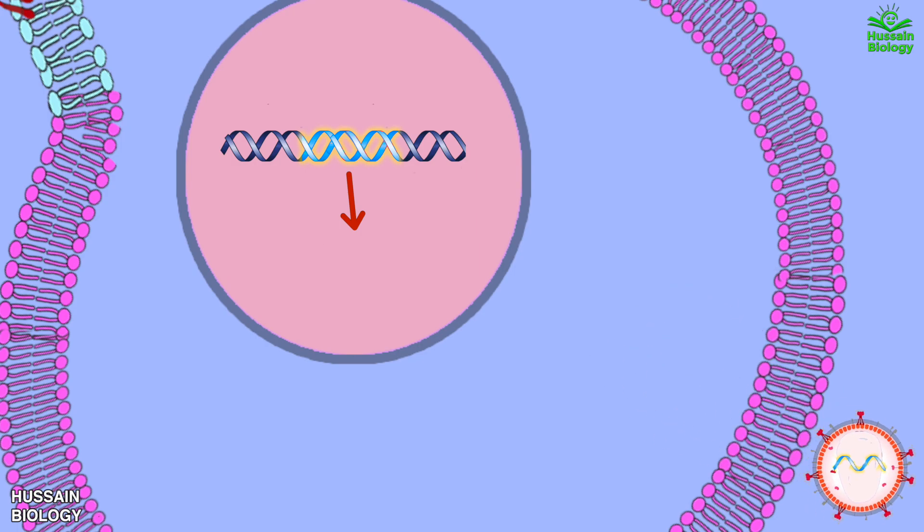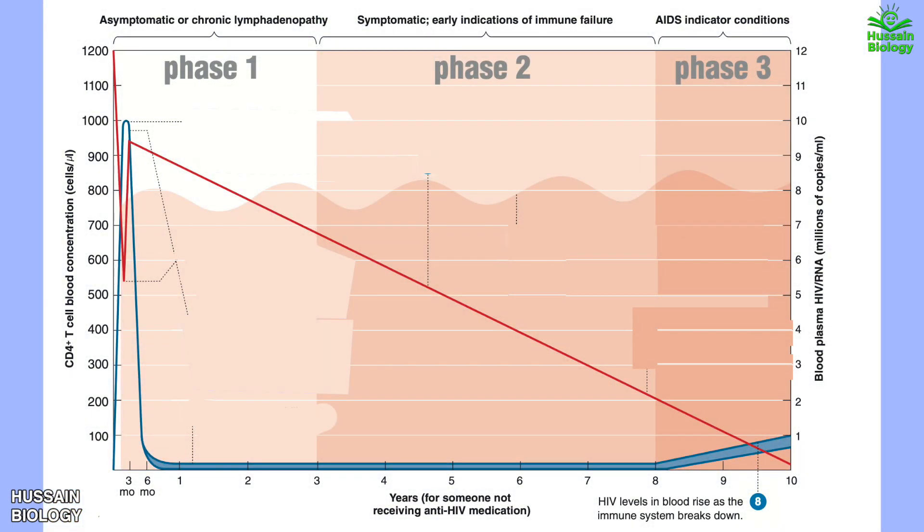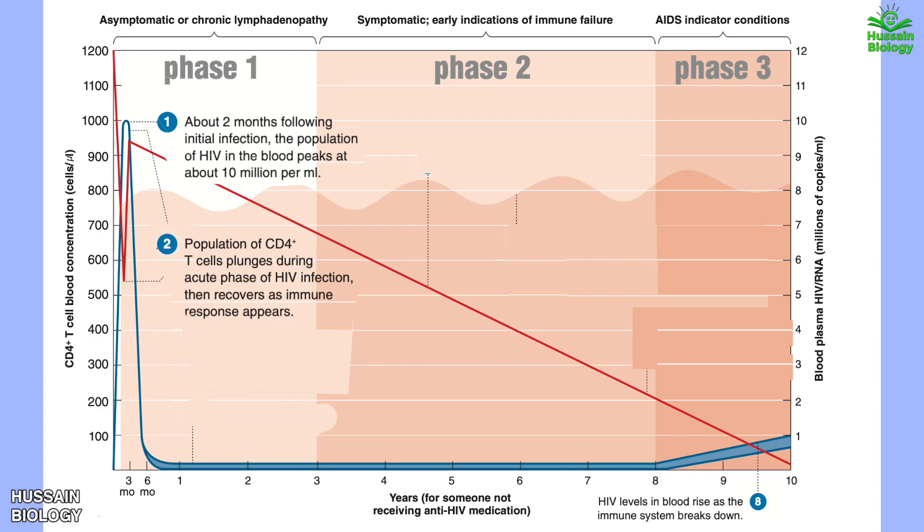Now let's discuss the stages of HIV infection in detail. HIV infection can be divided into three phases which can be depicted in this graph. Phase 1: About 2 months following initial infection, the population of HIV in the blood peaks at about 10 million per ml. The number of viral RNA molecules per ml of blood plasma may reach more than 10 million in the first week or so. The population of CD4+ T cells plunges during the acute phase of HIV infection, then recovers as the immune response appears, depicted by the red line here.